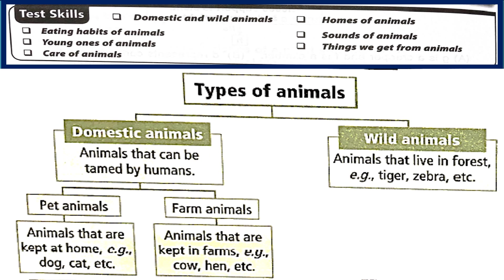Let's see the major types of animals. They are categorized as domestic animals and wild animals. Domestic animals are those that can be tamed by humans, whereas wild animals are those that live in forests. For example, tiger, zebra, and many more.